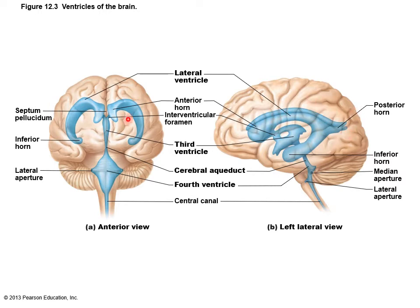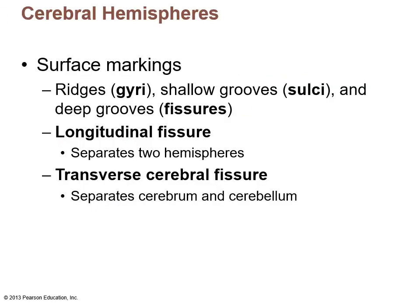Cerebrospinal fluid is replaced about three times a day and is reabsorbed into structures called arachnoid villi. To summarize: lateral ventricles → third ventricle → cerebral aqueduct → fourth ventricle → central canal; produced by the choroid plexuses and reabsorbed by the arachnoid villi.